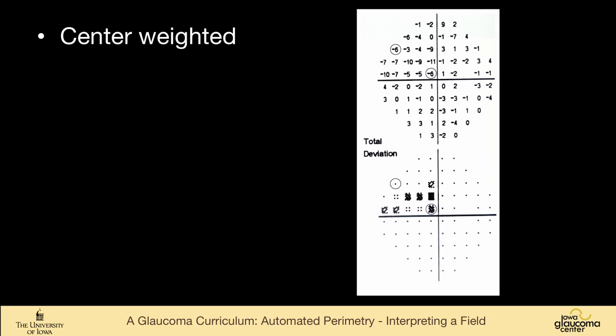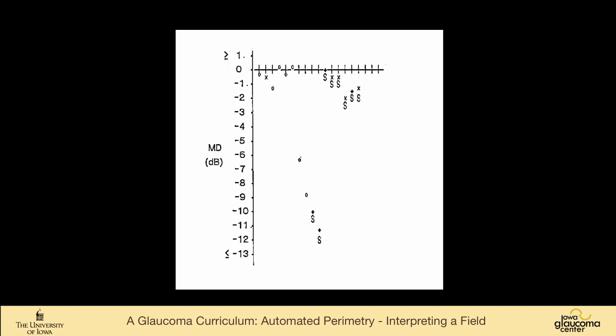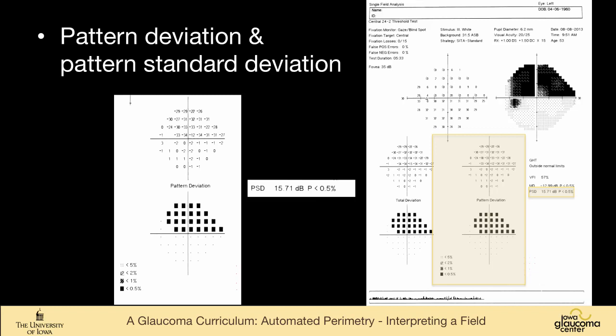And here's just an example of center-weighting, so you can see that these two circled points are both down by 6 decibels from expected, but the one that's closest to the center is assigned a highly significant probability of this being abnormal, whereas the one in the periphery is not. And this is just showing this mean deviation over time, and someone whose overall vision dropped and dropped and dropped, because of cataract, and then the cataract was taken out, and now their vision is back, their mean deviation is back to pretty normal.